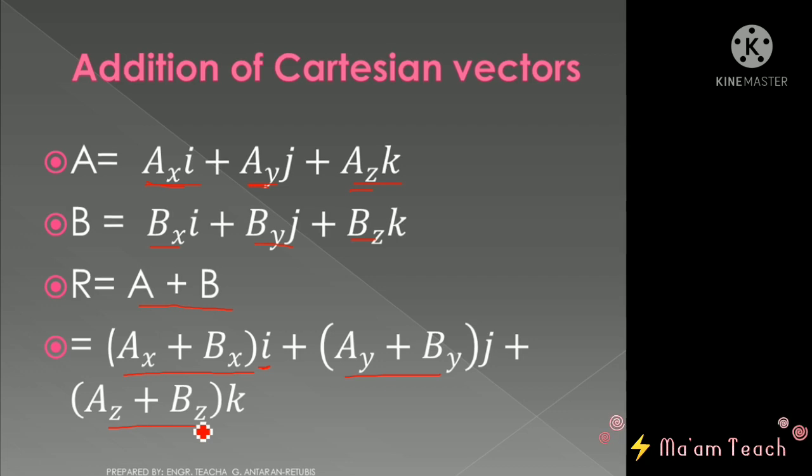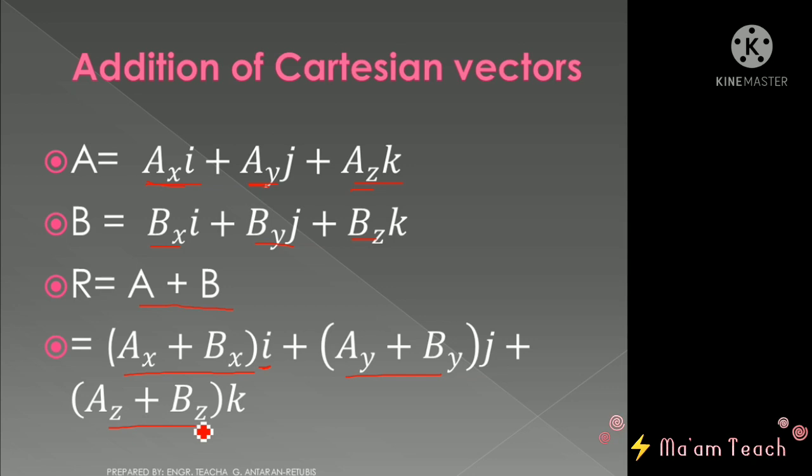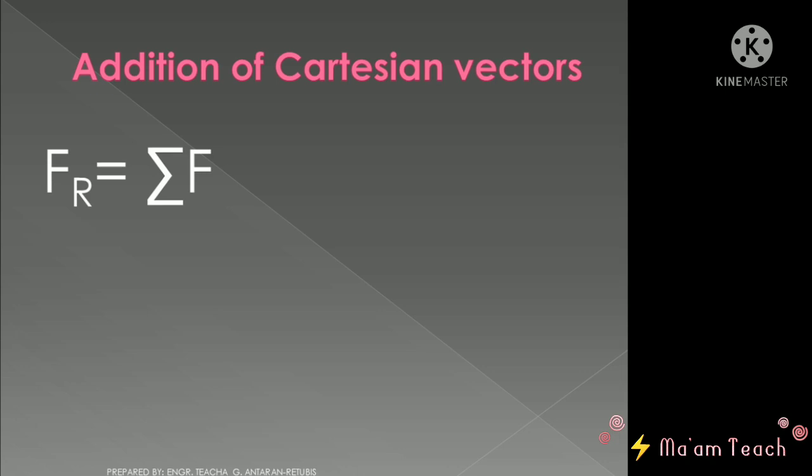That's why class we have said that it is easy to apply the vector addition if your vector is already in the Cartesian vector notation. So you don't have to worry about getting the x component and so on because you simply add them.